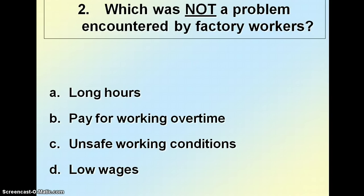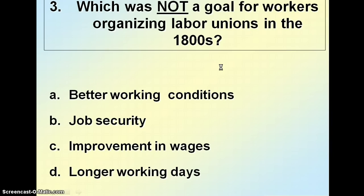Number two: which was NOT a problem encountered by factory workers — long hours, pay for working overtime, unsafe working conditions, or low wages? Notice the word 'not' — three of these are problems, one is not. Number three: which was NOT a goal for workers organizing labor unions in the 1800s and 1900s? That should be kind of obvious.